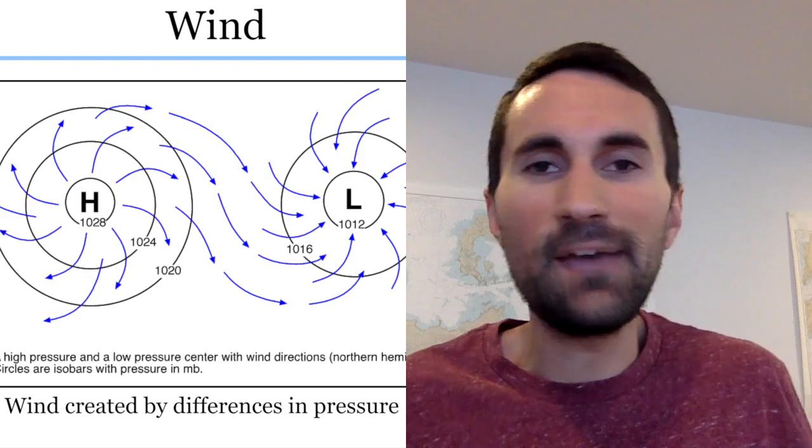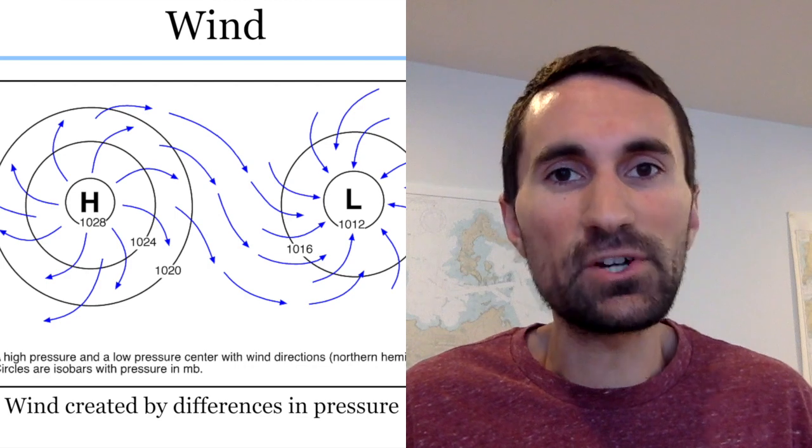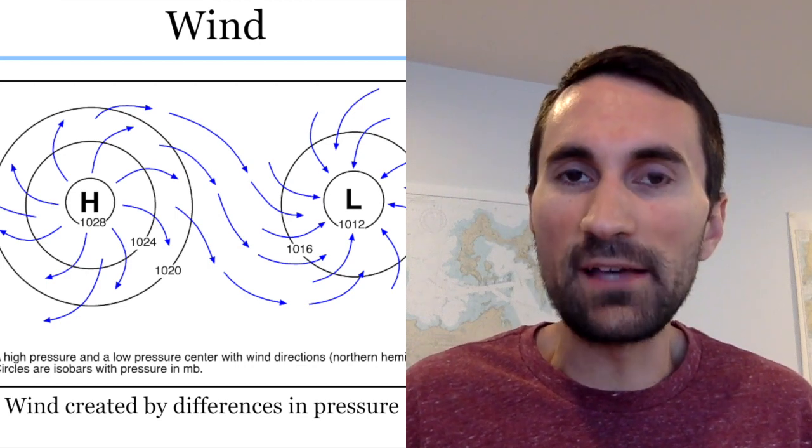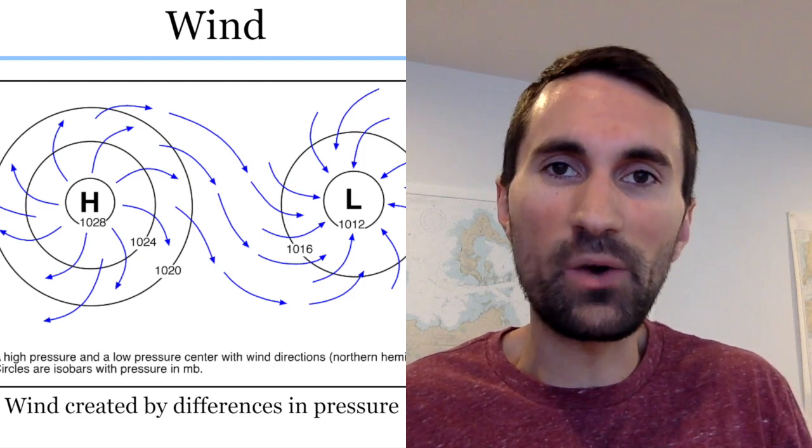It makes sense, right? If you have two buckets of water, nature works the same way — the water is going to overflow out of the first bucket and move into a bucket next to it that doesn't have as much in it. It wants things to be equal. So the wind goes out of high pressure towards low pressure at the surface, and it flows clockwise around an area of high pressure in the northern hemisphere and counterclockwise around low pressure in the northern hemisphere — that's where we live in New England.